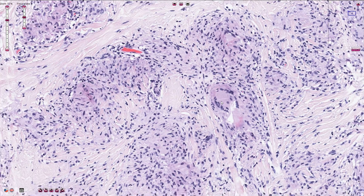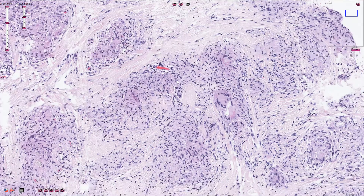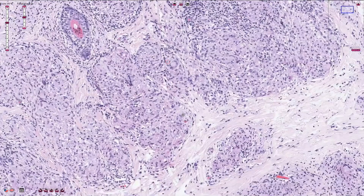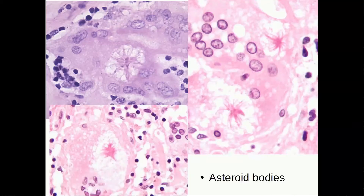Some examples downloaded from Wikipedia and Google illustrate asteroid bodies. These are star-shaped cytoplasmic bodies. It is not entirely clear what they are — probably some sort of damaged cytoskeletal structures.